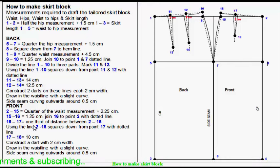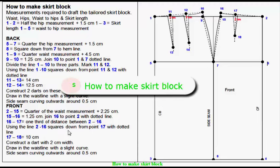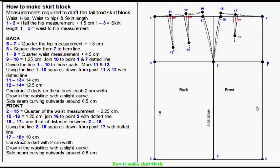16-17: One third of distance between 2 and 16. Using the line 2-16, square down from point 17 with dotted line. 17-18: 10 cm.